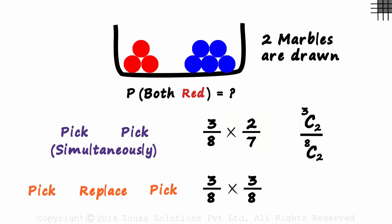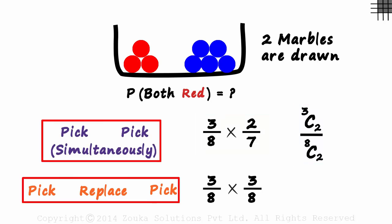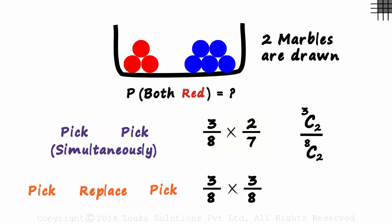So unless specifically mentioned, these are the two cases we have to consider when two things are to be picked from a set of n things. With the same data given, what would be the probability of both marbles being drawn being of the same colour? We will see the solution in the next part of the session.